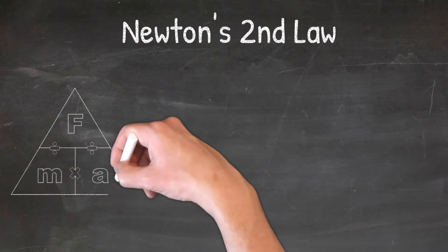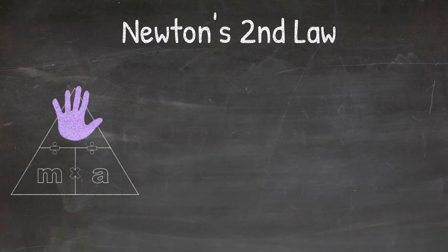So if I'm solving for force, I cover up the letter F and the triangle tells me to multiply mass times acceleration. I know this because the variables are next to each other.